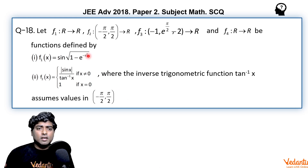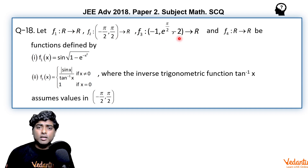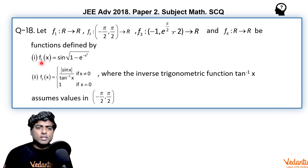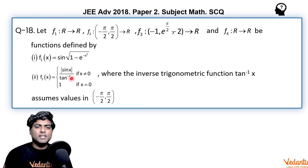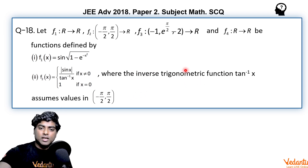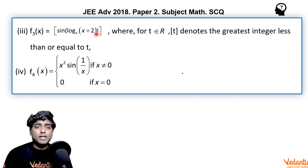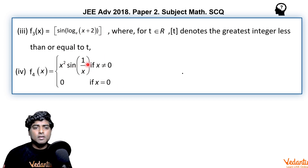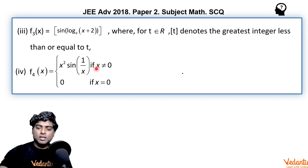There are four functions defined: f1, f2, f3, f4, with certain domains. Domain of f1 and f2 is R to R, f3 is from minus 1 to e raised to pi by 2 minus 2, and f4 is R to R. The functions are: f1(x) = sin(√(1 − e^(−x²))), f2(x) = |sin x| / tan⁻¹(x) for x ≠ 0 and 1 for x = 0, f3(x) = greatest integer of sin(log(x+2)), and f4(x) = x² sin(1/x) for x ≠ 0 and 0 for x = 0.